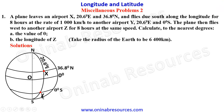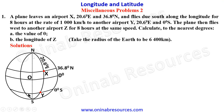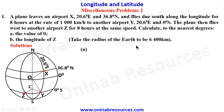The plane then flies west to another airport Z. It flies west from Y, so we locate the longitude of Z — which we don't yet know — and mark the point Z. We note that the path from X to Y is along a great circle (longitude), while the path from Y to Z is along a small circle (parallel of latitude).